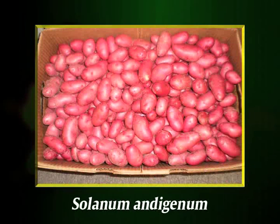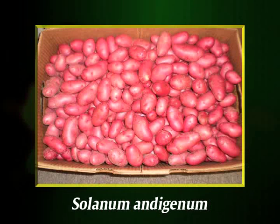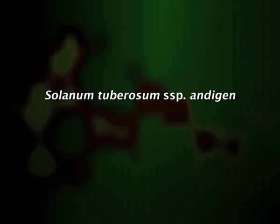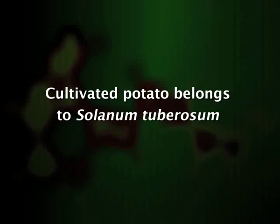It was first revealed by Russian scientists that great diversity of forms exists in these primary and secondary centers of origin. They were of the view that among the tetraploid cultivated types, the Andean potatoes belong to the species Solanum andigena and the Chilean types belong to Solanum tuberosum. But later it was found that there does not exist sufficient justification to regard Solanum andigena as a separate species from Solanum tuberosum. Hawkes suggested that the two should be regarded as geographical subspecies of Solanum tuberosum — the Andean short-day forms as Solanum tuberosum subspecies andigena and the Chilean long-day forms as Solanum tuberosum subspecies chilense.